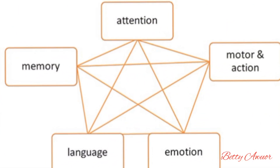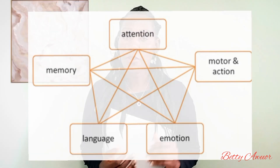Cognitive decline includes reduced attention and concentration, memory problems, problems with language and communication, difficulty in decision making, and problems with sight. Keeping your blood pressure within the normal range is very important in preventing these conditions.